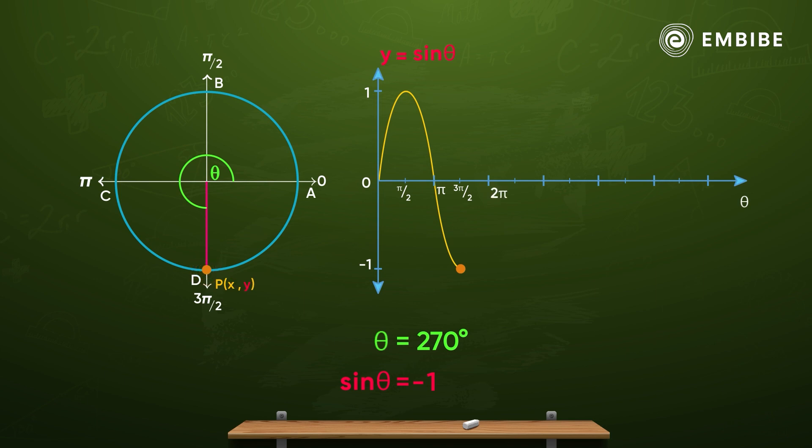And last, 3 pi by 2 to 2 pi, we will come back to where we started. Back to 0, which is point A. Congratulations! From 0 to 2 pi, we have finished one cycle.